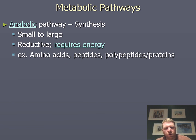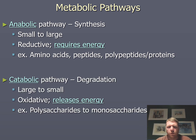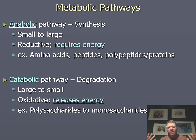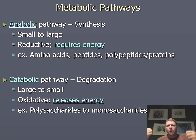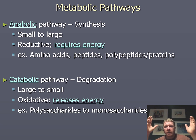Metabolic pathways fall into two categories: anabolic or catabolic. An anabolic pathway synthesizes and builds up — think anabolic steroids building up muscles — taking something small to make it large. Catabolic processes break things down, taking something large to something small.